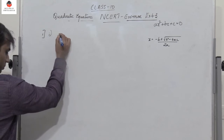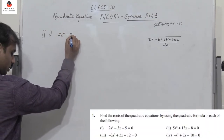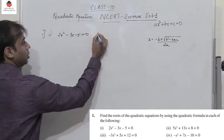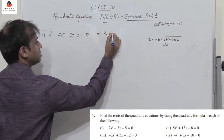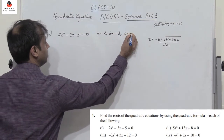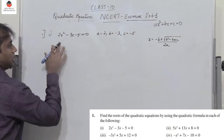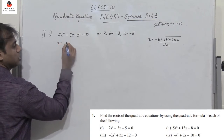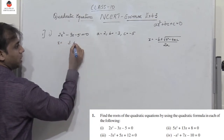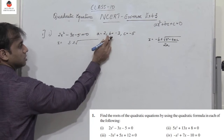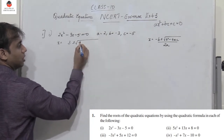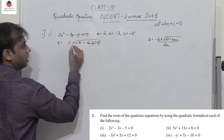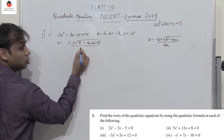The first one: 2x² minus 3x minus 5 equals 0, so a is 2, b is minus 3, c is minus 5. Substituting the values: x equals minus b, which is minus of minus 3, giving plus 3, plus or minus root of b² — 3² is 9 — minus 4 into 2 into minus 5, divided by 2a, which is 2 into 2 equals 4.